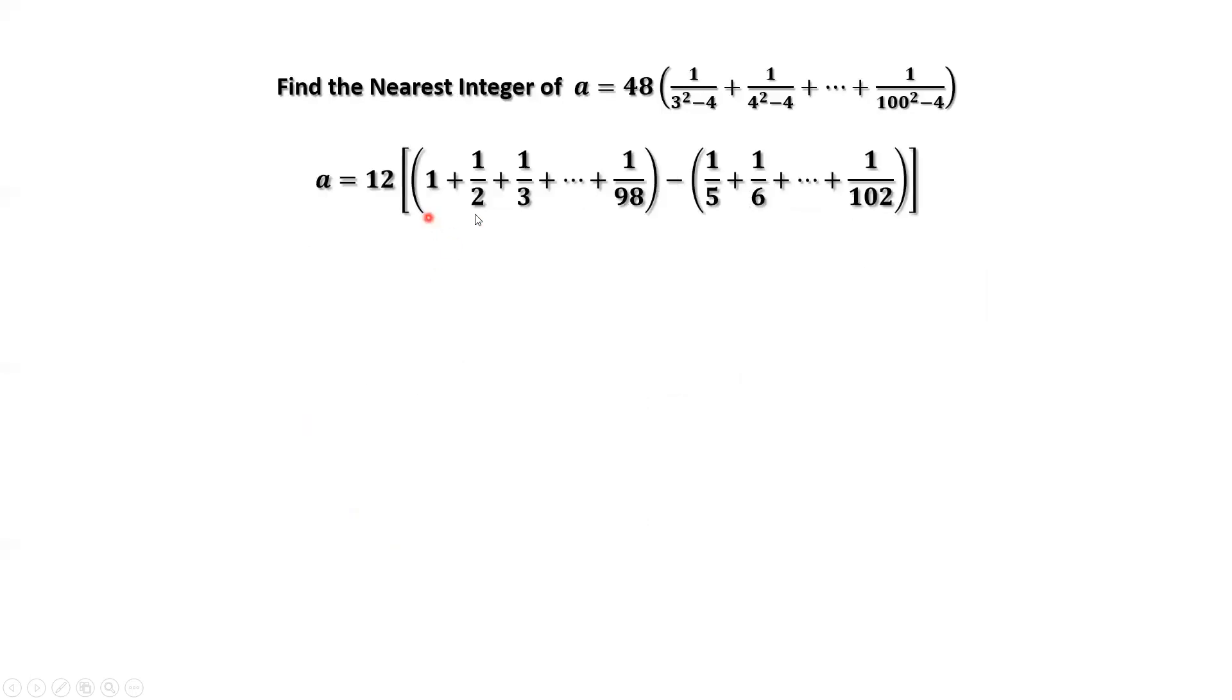Check the inside part carefully. In the first part, do we have 1 fifth? Yes, 1 fifth, 1 sixth, 1 seventh, until 1 over 98. In the second part, we have 1 fifth, 1 sixth, and also we have 1 over 98. Positive, negative cancel each other.